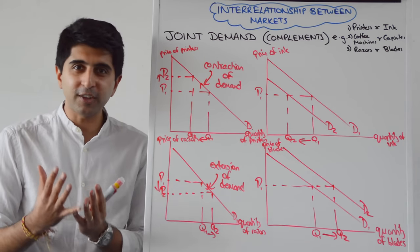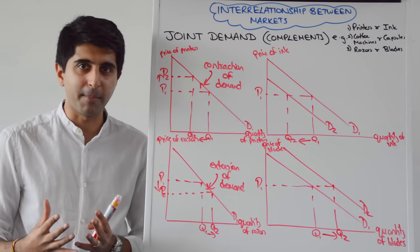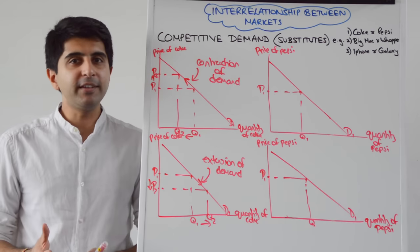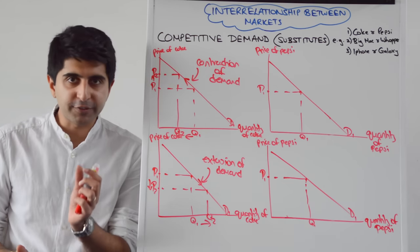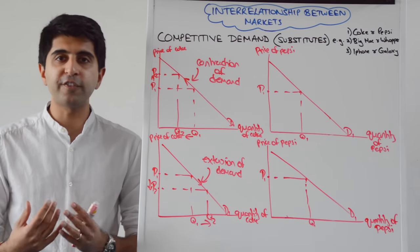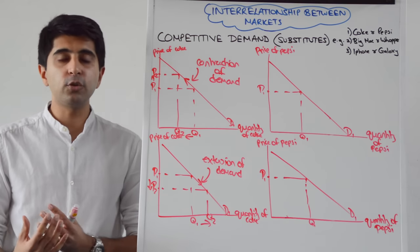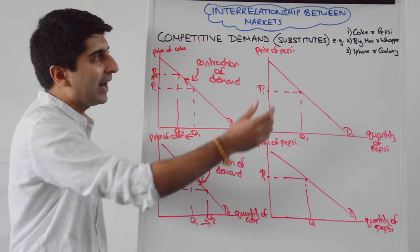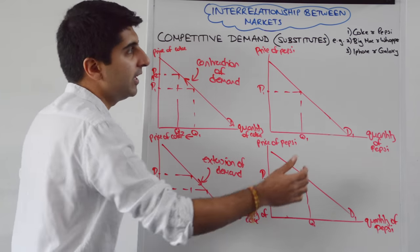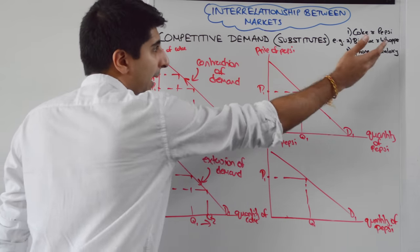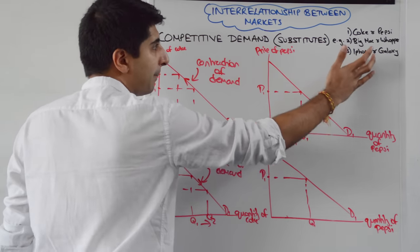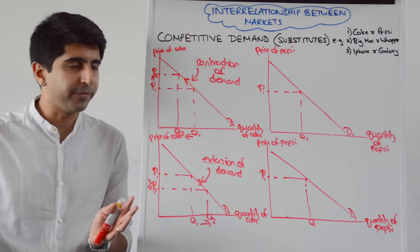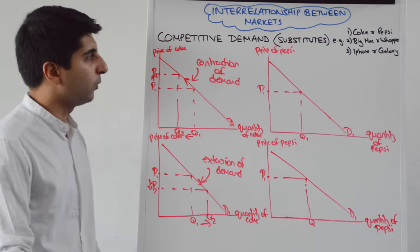What about substitute goods — goods that are in competitive demand? Goods that are in competitive demand are known as substitute goods. They're rival goods for each other, very similar to each other, and in competition with each other. Some classic examples: Coke and Pepsi, Big Mac and the Whopper, Apple iPhone and the Samsung Galaxy. All classic examples of substitutes — loads out there in the real world.